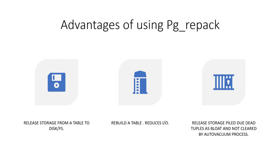What are the advantages of using PG Repack? The PG Repack utility releases storage from the table back to the file system. Dead tuples occupying storage in tables or indexes lead to slower performance for queries involving those tables. It removes that storage back to the file system. It can be used for rebuilding a table where bloating has occurred and auto vacuum is not able to remove it. Rebuilding a table reduces IO because the table size becomes smaller in terms of number of pages.